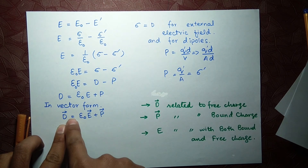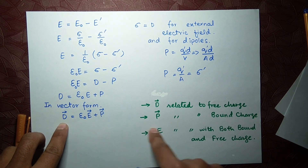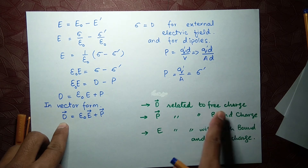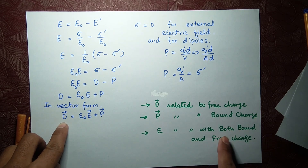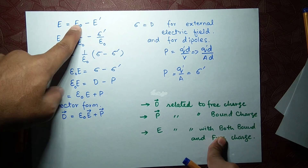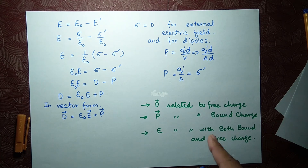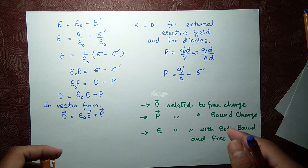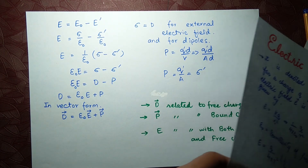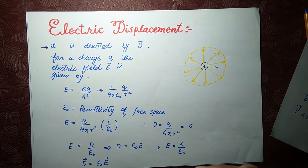From the substitution, D equals epsilon naught E plus P. In vector form, D equals epsilon naught E plus P. So D is related to the free charge, P is related to the bound charge, and E is related to both, since epsilon naught corresponds to the free charge term and E prime to the bound charge term.